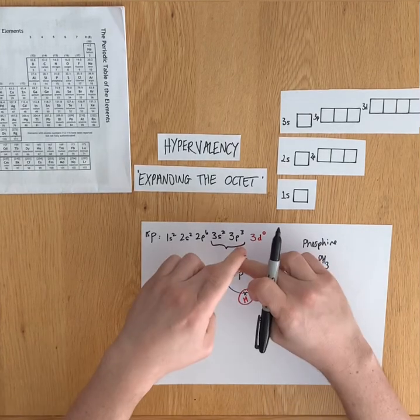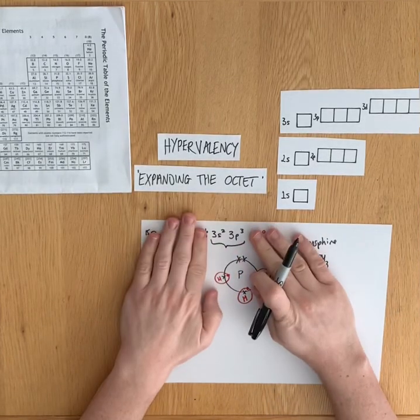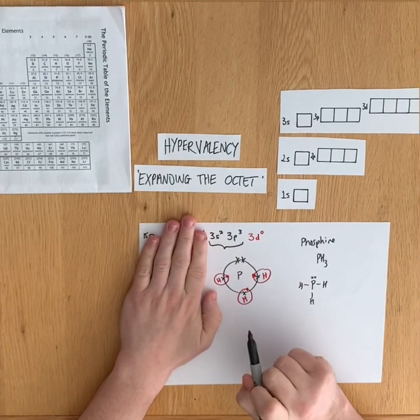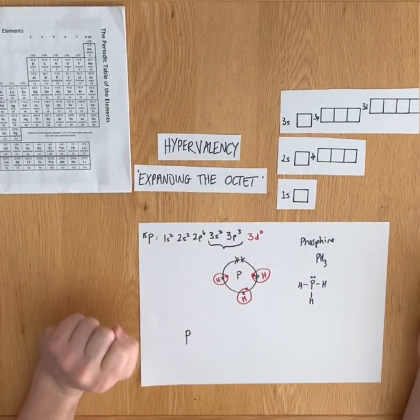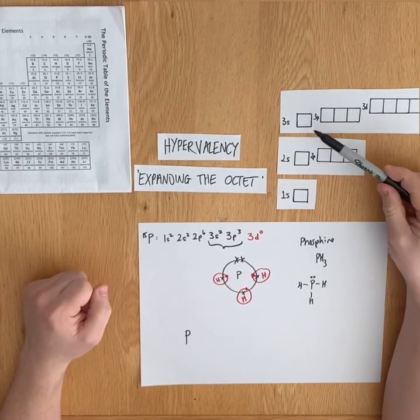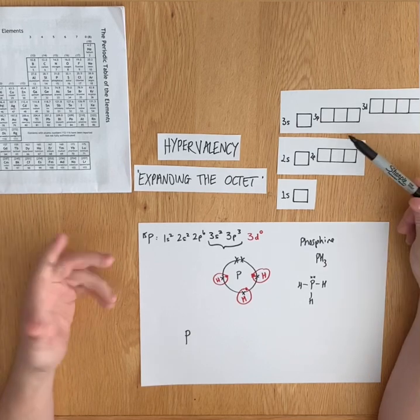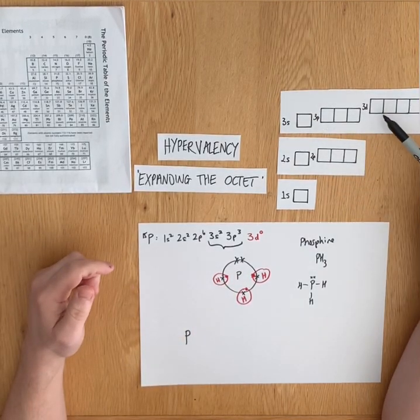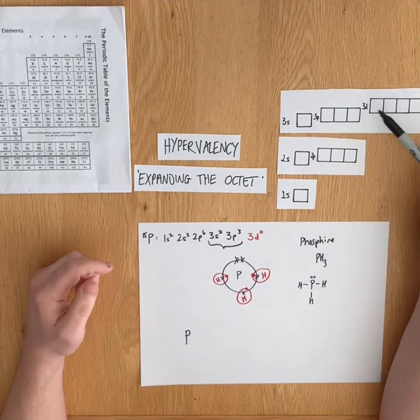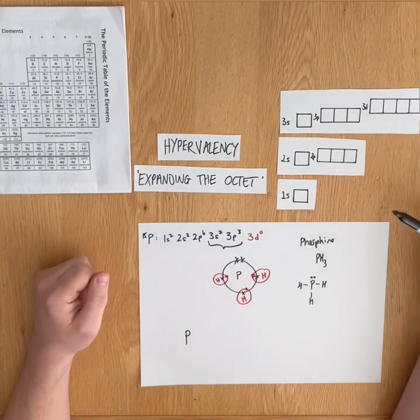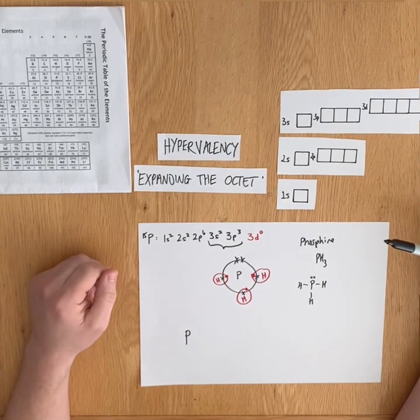Phosphorus has five electrons in its outer shell, in its third shell. It can be forced to share all five of them by promoting two of those electrons into a 3d orbital. It can then share up here, here, here, here, here, and here. It can have a total of 10 electrons in its outer shell.